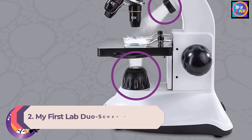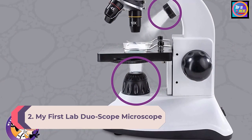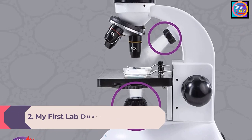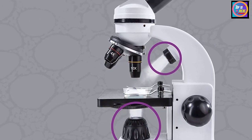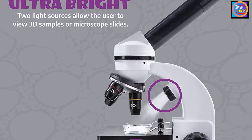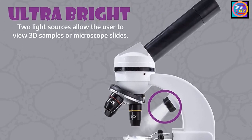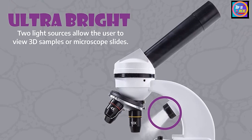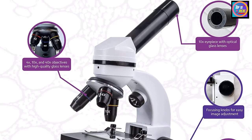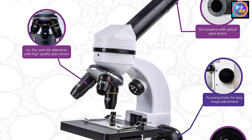Number 2. My First Lab Duoscope Microscope. One of the standout features of this microscope is its combination of a compound and stereo-dissecting microscope. This feature enables you to use the microscope to observe large 3D objects such as a bug or coin. Your purchase comes with three magnification settings including 40x, 100x, and 400x.